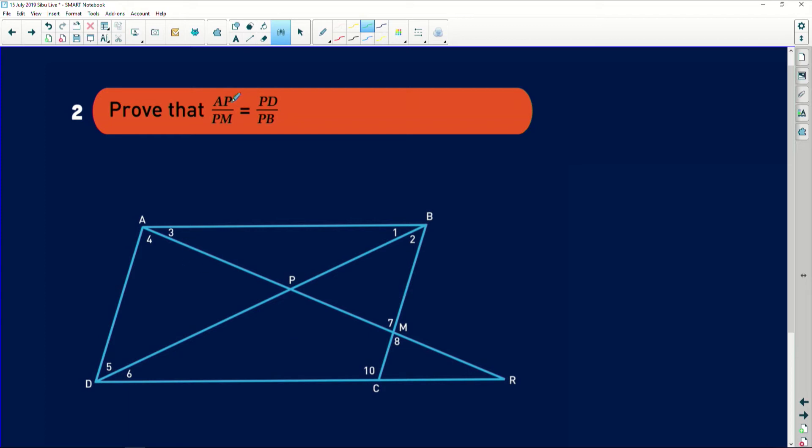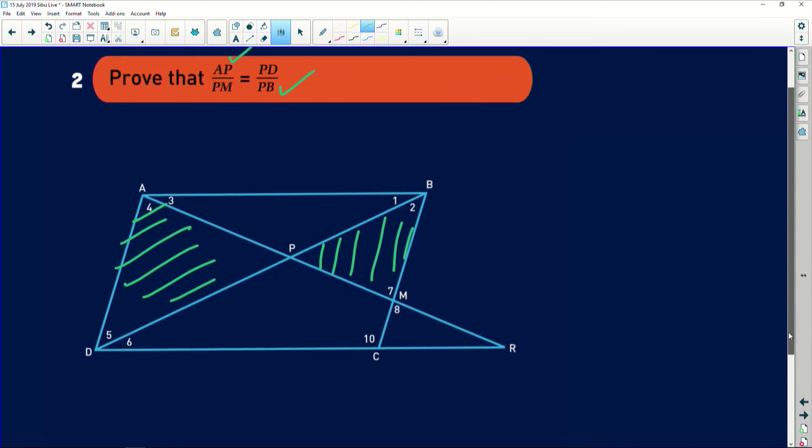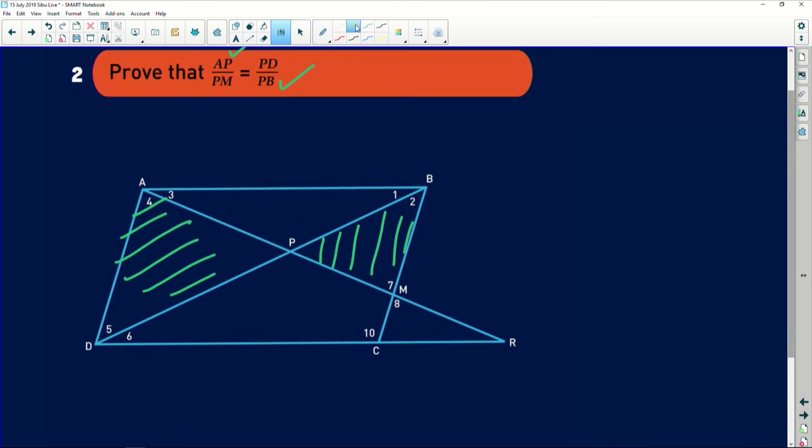So basically, this AP and this line PB are simply members of a particular triangle. And we also need PD in this particular question. So they're talking about this triangle because it's got the line AP and the line PD. We also want PM and PD versus this one, the second triangle there. Once more, we have to prove that they're similar to each other.